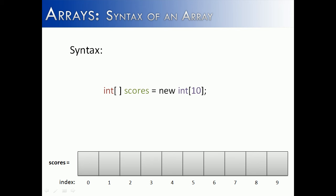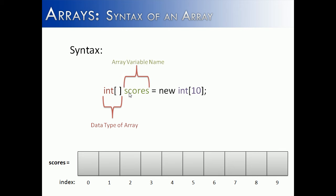Now that we know what arrays are, we need to look at how arrays are created. The syntax for an array in Java starts with first the data type. The data type for our array is going to be an integer, and then you put brackets — an empty set of brackets — right after the data type.